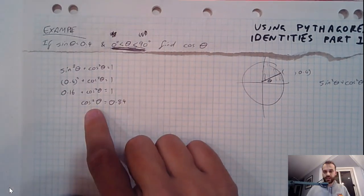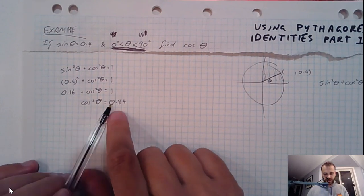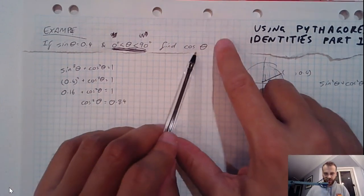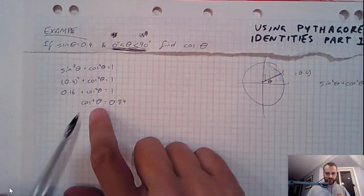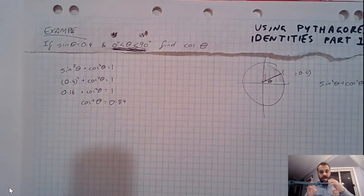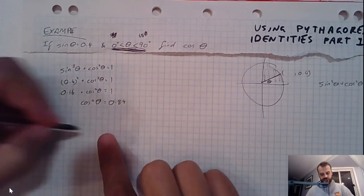Now I don't want cos squared theta. I know cos squared theta now is 0.84, but I want cos theta. So to get rid of the cos theta squared, I just take the square root of both sides.